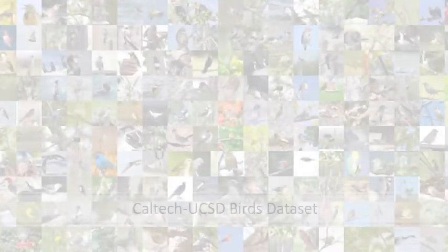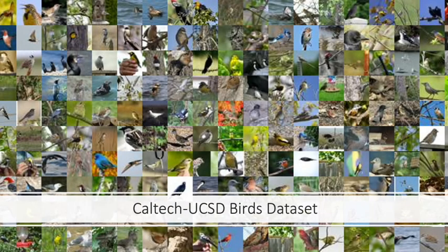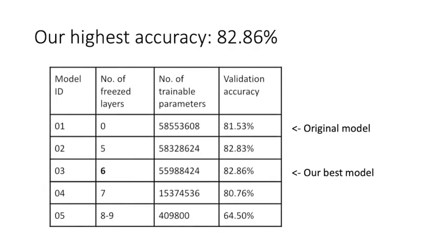We trained our model using the Caltech-UCSD Birds dataset with 200 bird species containing more than 10,000 images. We adopted transfer learning with ResNet-152 and investigated the impact of image augmentation and various hyperparameters, such as the optimizer and the amount of frozen weights, on the accuracy of the model.